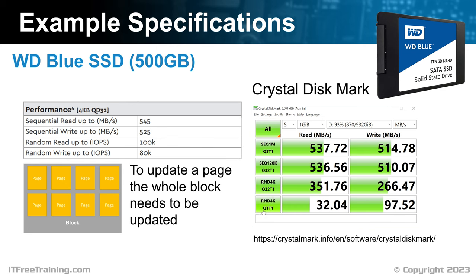The last test really puts the solid state drive through its paces. The test will once again use 4KB blocks, but now the queue length is only 1. Even with a queue length of 1, the testing software will do its best to make sure the solid state drive is always under load. Since there is only one request, it won't be able to combine multiple requests together in order to produce better results. Notice the read result is about 32MB per second and write is about 97MB per second. It may seem strange that read speed is slower than write speed. In this case, the solid state drive has put the write requests into cache, so even though the queue length is 1, it is essentially buffering some of the requests and writing them all at once. Thus, the write speed is higher than the read speed, which is normally not the case.